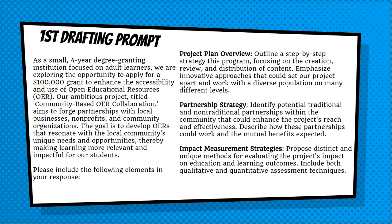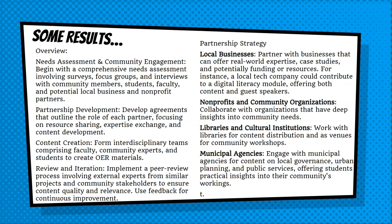In this prompt, I took one of the ideas from the brainstorming prompt — I asked AI to develop a program focusing on community-based OER collaborations in preparation for the grant. I said, this is what I want to apply for and do with it. It provided a first draft pathway to build out such a program, including essential elements like a needs assessment, partnership development, content creation processes, and partnership strategy. I can follow up with more prompts to get further details for each piece, building out the project quite substantially in minutes rather than hours.